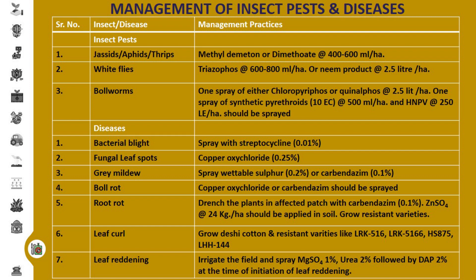To control bollworm complex, one spray of either chlorpyrifos or quinalphos at the rate of 2.5 liters per hectare, then one spray of synthetic pyrethroids 10 EC at the rate of 500 ml per hectare, and HaNPV at the rate of 250 LE per hectare should be sprayed. In case of bacterial blight disease, this disease is controlled by spraying with streptocycline at the rate of 0.01 percent. The next major disease is fungal leaf spot, which is controlled by spraying copper oxychloride at the rate of 0.25 percent. To control grey mildew, the crop should be sprayed with wettable sulfur at 0.2 percent or carbendazim at 0.1 percent. To control boll rot disease, spray with copper oxychloride or carbendazim.